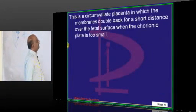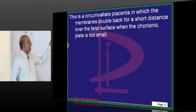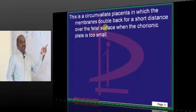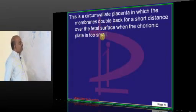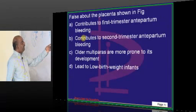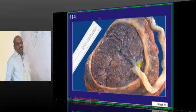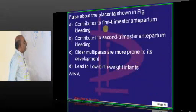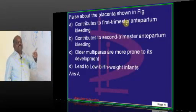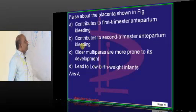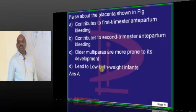Basically, it is a circumvallate placenta in which the membranes double back for a short distance on the fetal surface and the chorionic plate is very small in this given case. It contributes to second trimester antepartum bleeding, not the first trimester. And old multiparous women are more vulnerable and it leads to low birth weight. These are all true statements.